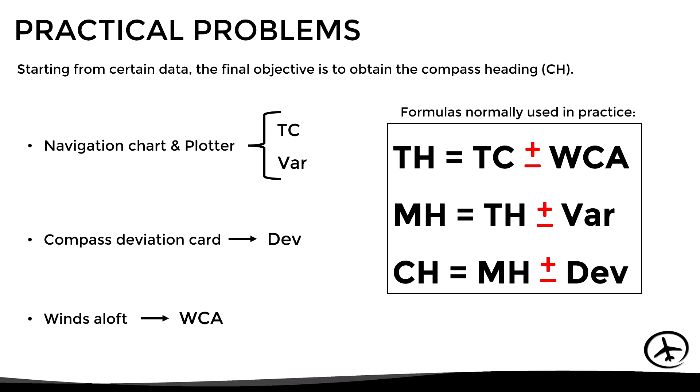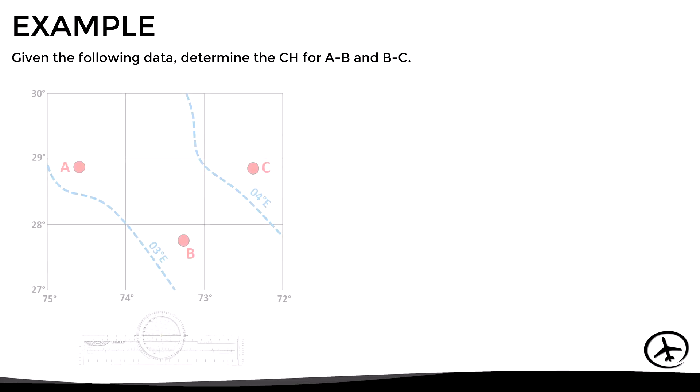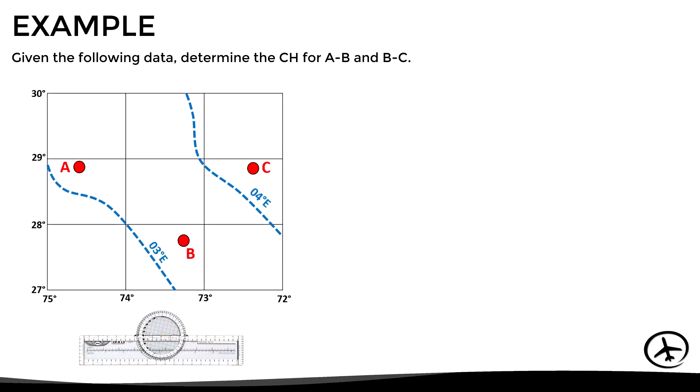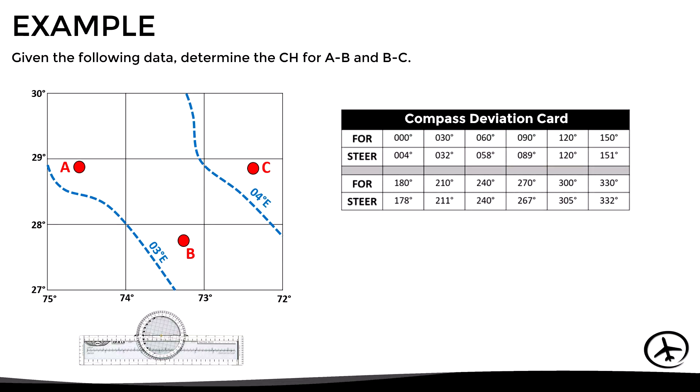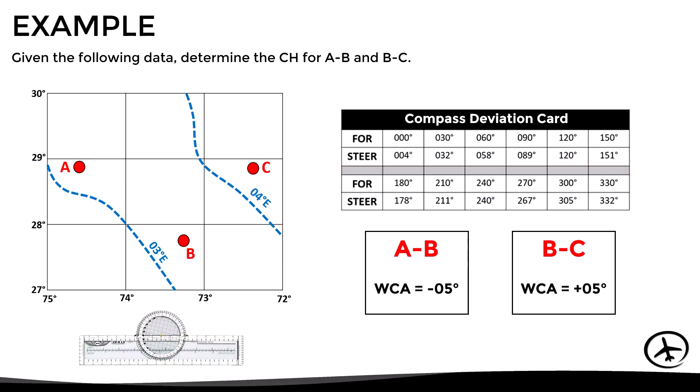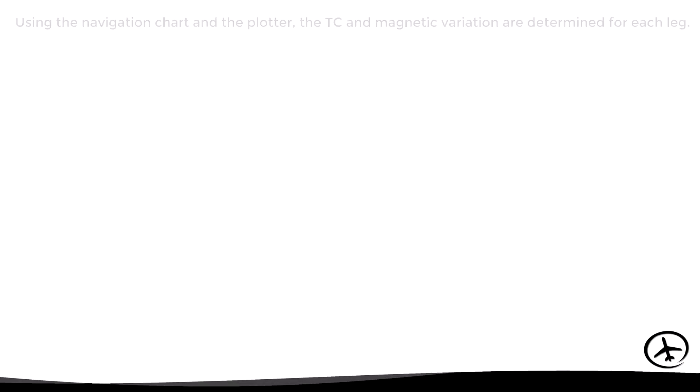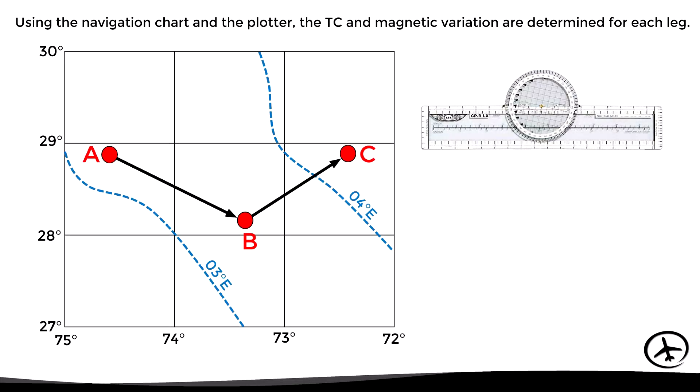Let's see how to apply this with a practical example. Given initial data, we have to determine the compass heading for legs AB and BC. We have a VFR navigation chart, a plotter, the aircraft's compass deviation card, and the wind correction angles for each leg. In a real scenario we would calculate wind correction angles manually using a flight computer or wind triangle; however, we will use generic angles directly for this explanation.